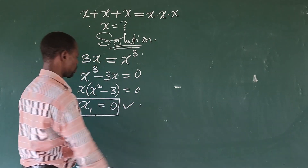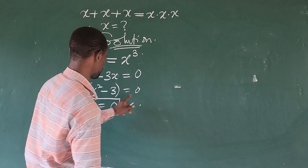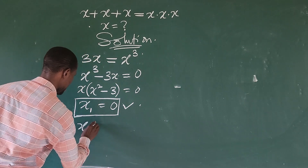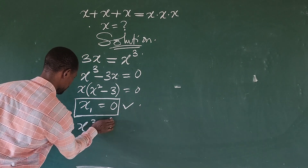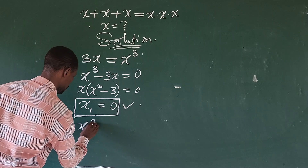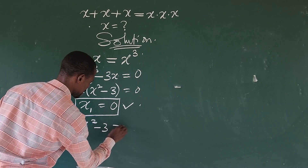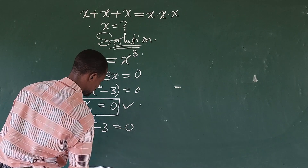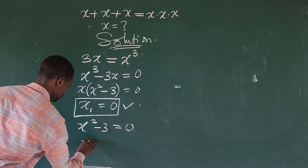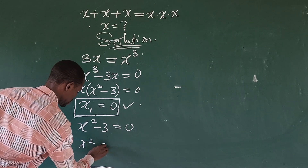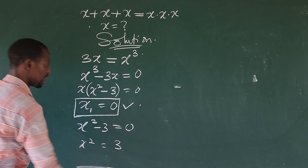So let's look at case 2, where we equate x squared minus 3 to 0. These two — please note, not cube — x to the power of 2 minus 3 equal to 0. Sending this to the other side, we have x to the power of 2 equal to positive 3.